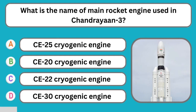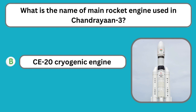Question number seven: What is the name of the main rocket engine used in Chandrayaan 3? The correct answer is the Cryogenic engine CE-20.